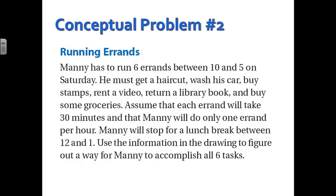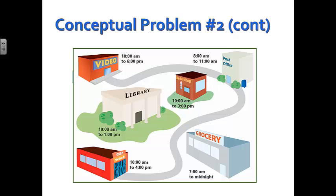Here's another conceptual problem. Manny has to run six errands between 10 a.m. and 5 p.m. on Saturday. He has to get a haircut, wash his car, buy stamps, rent a video, return a library book, and buy some groceries. Assume that each errand will take 30 minutes, and that Manny will only do one errand per hour. He's got to get between the places. He will stop for a lunch break between 12 and 1. We're going to use information on the following drawing to figure out a way for him to accomplish all of this.